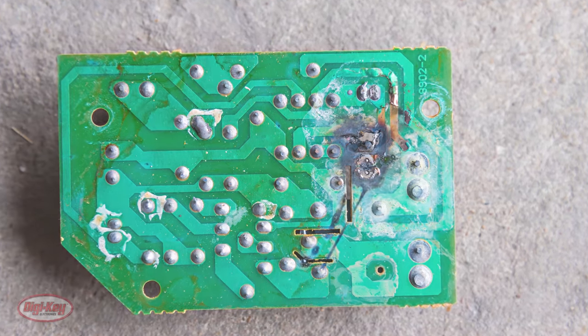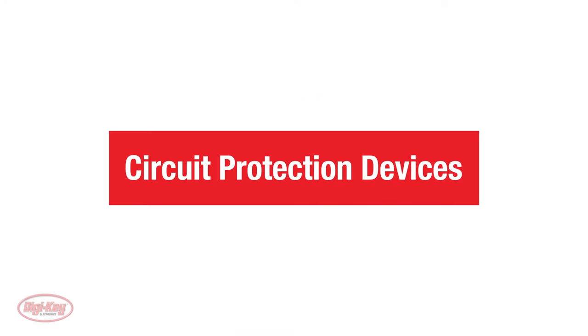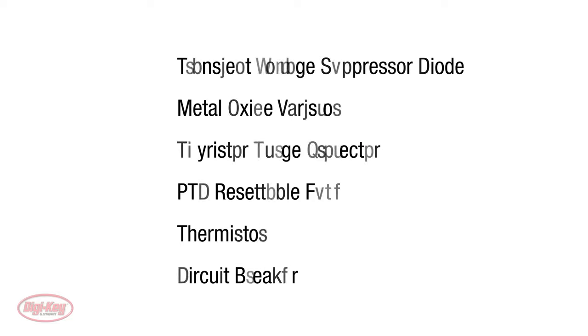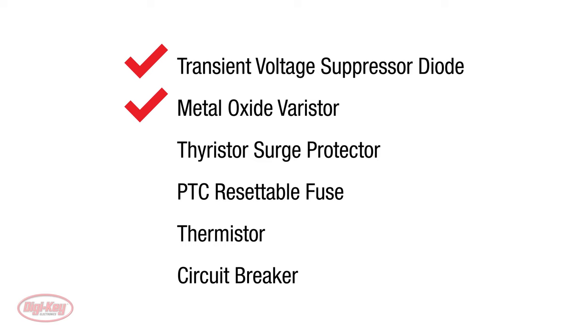Now that we've gone over the possible causes of damage in electronic devices, let's talk about some electronic devices that are designed for circuit protection, such as a transient voltage suppressor diode, metal oxide varistor, thyristor surge protector, PTC resettable fuse, thermistor, and a circuit breaker.